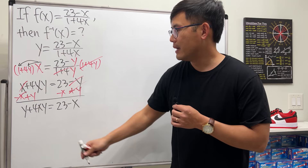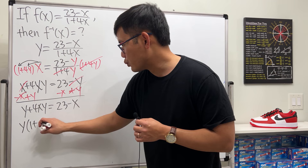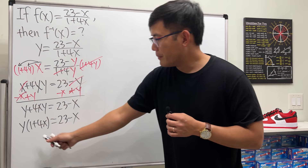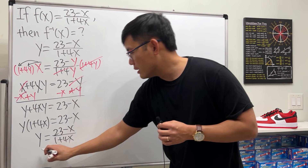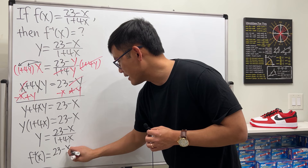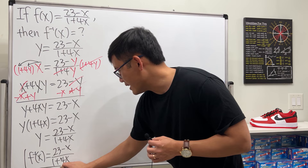We have y plus 4xy equals 23 minus x. Both terms on the left have y, so factor out: y times (1 plus 4x) equals 23 minus x. Dividing both sides gives y equals (23 minus x) over (1 plus 4x), and this y is exactly f inverse.